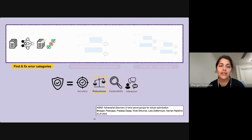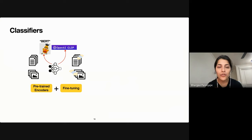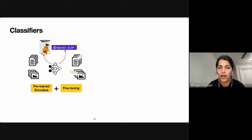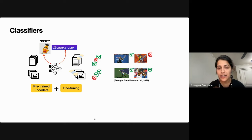I'll start with a technique to identify systematic errors in classifier models. In this work, we're tackling dataset bias with the goal of building a more robust model. Classifiers commonly consist of a pre-trained encoder like BERT or OpenAI CLIP for images, which are then fine-tuned on supervised data. Users can get valuable information from errors made on test examples, especially if these errors are categorized into semantically meaningful slices.